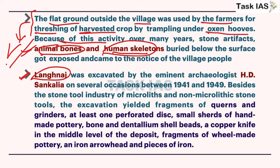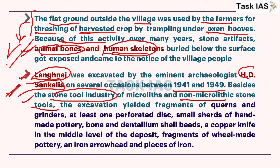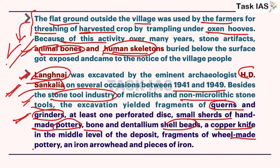Langnaas is another site and was a very targeted excavation by H.D. Sankalia, an eminent anthropologist under the Deccan School, who excavated the site between 1941 and 1949 many times. Stone tool industry of both microlithic and non-microlithic stone tools were excavated here. Querns and grinders - features of Neolithic - were also found. Small sets of handmade pottery, bone, shell beads, copper knife, wheel-made pottery, and pieces of iron were also found there.